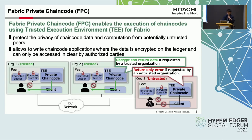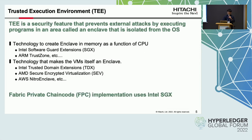Hyperledger Fabric Private Chain Code enables the execution of chain codes using a trusted execution environment for Hyperledger Fabric to protect the privacy of chain code data and computation from potentially untrusted peers. It allows writing chain code applications where the data is encrypted on the ledger and can only be accessed in clear by authorized organizations and or users.